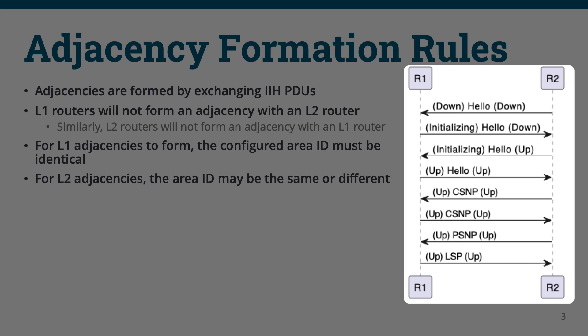In the beginning, we see that both R1 and R2 see each other as being in a down state. This is a little inaccurate, because neighbors are dynamically discovered in ISIS, and in this state the routers essentially are just unaware of each other — they just wouldn't have any entry for one another at all.